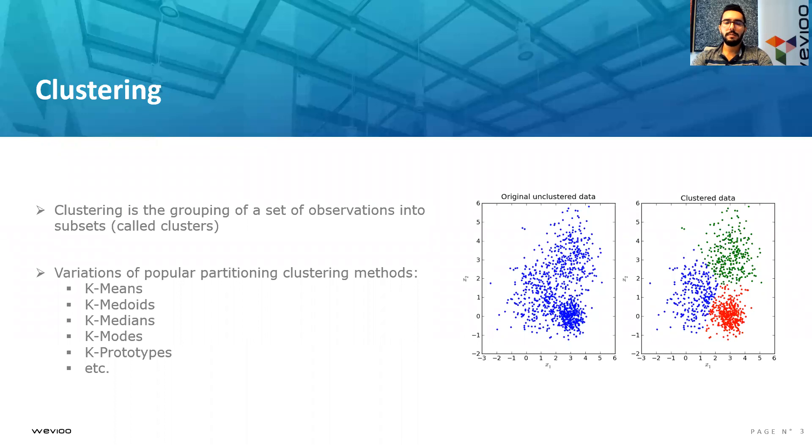The main differences between these variations are in initialization using random centroids or choosing from data points. The centroids might be the means, the medians, the medoids, the modes, or even the prototypes. For the distances used, they might use the Euclidean distance, the Hamming distance in the case of K-modes, or even the combination of both in the case of K-prototypes.